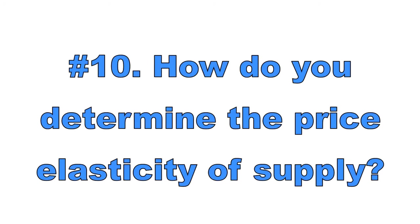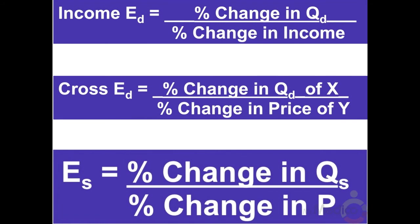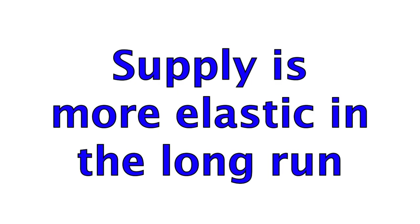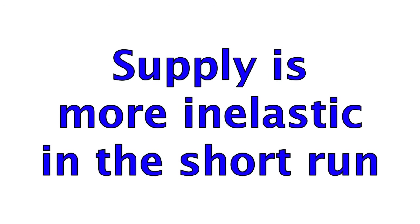Number ten: how do you determine the price elasticity of supply? The price elasticity of supply measures how responsive sellers are to changes in price. The formula is percent change in quantity supplied divided by percent change in price. If the price elasticity of supply is greater than one, supply is elastic — sellers are sensitive to price changes. When it is less than one, supply is inelastic — sellers are not very responsive. An elastic supply curve is relatively flatter than an inelastic supply curve, and an inelastic supply curve is relatively steeper. The most important determinant of the elasticity of supply is the amount of time sellers have to adjust production — the long run means supply is more elastic, and the short run means supply is more inelastic.